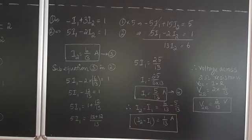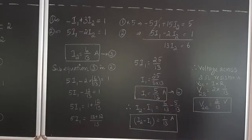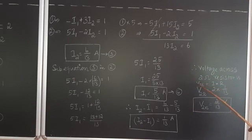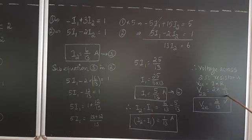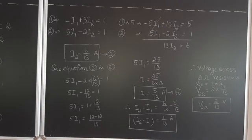The current through the 2 ohm resistor is i2 − i1 = 6/13 − 5/13 = 1/13 amperes. The potential difference across BD is the voltage drop across the 2 ohm resistor: V = IR = (1/13) × 2 = 2/13 volts. That is the potential difference between points B and D.